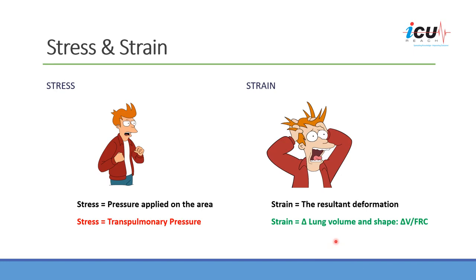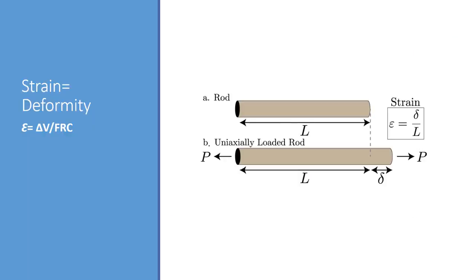If you have a rod and you apply stress — pressure — on it, you end up elongating it. The delta part that is elongated relative to the original length of the rod equals the strain endured by that material.